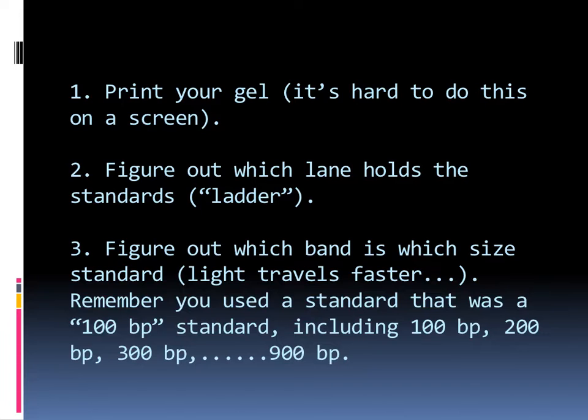Next, you're going to look at the gel and figure out which lane holds the standards, also known as ladder. And third, you're going to figure out which band is which size standard. And remember that light bands or light weight bands travel faster than heavier bands. Remember that you used a standard in our lab exercise that is referred to as a 100 base pair standard, and it includes a fragment or a mixture of fragments that are 100 base pairs, 200 base pairs, 300 base pairs, and so on, up to 900 base pairs.